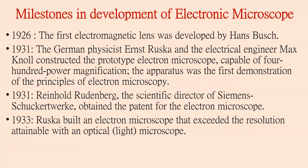Let us now discuss the milestones in the development of the electron microscope. In 1926, the first electromagnetic lens was developed by Hans. After five years, in 1931, the German physicist Ernst Ruska and his colleague, electrical engineer Max Knoll, constructed the prototype of an electron microscope capable of 400 power magnification. In 1931, Reinhold Rüdenberg, the scientific director of Siemens, obtained the patent for the electron microscope.